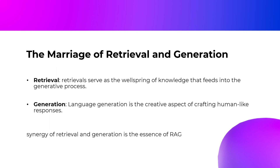The Marriage of Retrieval and Generation. At the core of RAG is the harmonious marriage of two pivotal components. Firstly, retrieval: information retrieval involves fetching relevant data from vast knowledge bases or repositories. In RAG, this is akin to a librarian skillfully locating the right books from an enormous library — a wellspring of knowledge that feeds into the generative process. Secondly, generation: language generation is the creative aspect of crafting human-like responses. Armed with retrieved knowledge, the AI becomes a proficient author, weaving narratives and answering queries. The synergy of retrieval and generation is the essence of RAG, transforming it into an AI model that can not only understand the world, but also communicate fluently about it.